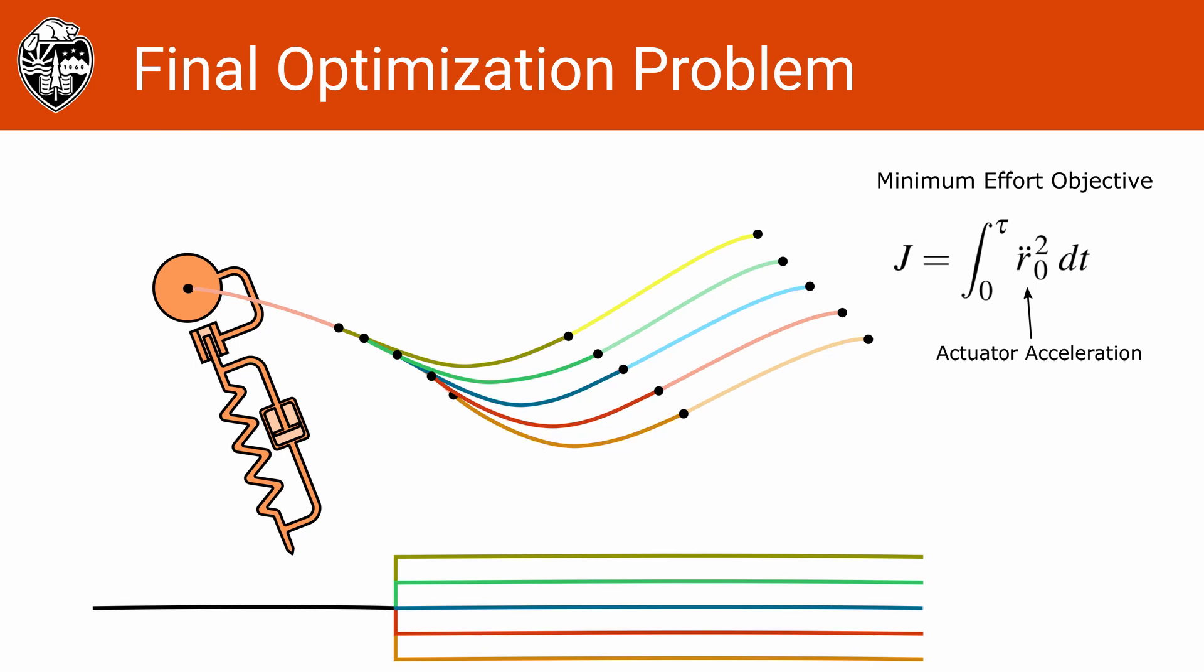This is a relatively common minimum effort objective. In practical terms, this is equivalent to minimizing the amount of energy lost to resistive heating in an electric motor. We define rejecting the disturbance as the robot ending up in the same apex state relative to the new ground for each disturbance case.